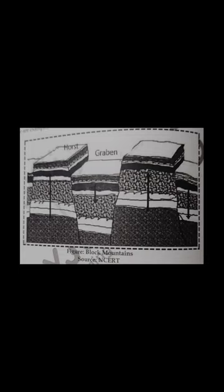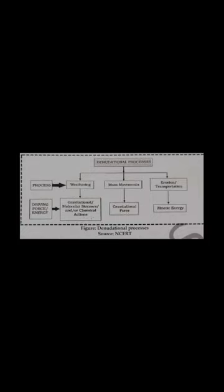Exogenic processes or denudation processes: all exogenic geomorphic processes are covered under a general term — denudation. The word 'denude' means to strip off or to uncover. Weathering, mass wasting/movements, erosion, and transportation are included in denudation. The exogenic processes derive their energy from the atmosphere, determined by the ultimate source of energy — the sun — and also the gradients created by tectonic factors. Denudation processes are divided into three: weathering, mass movements, and erosion/transportation.